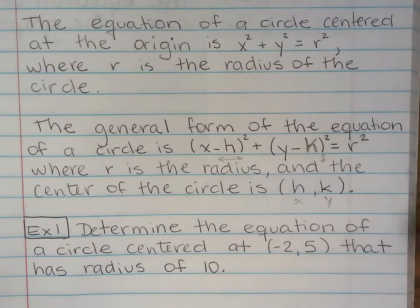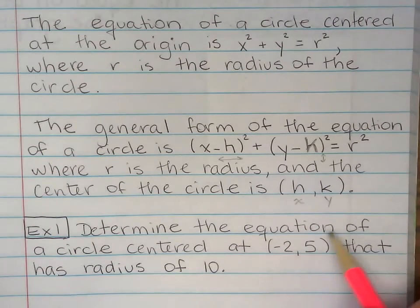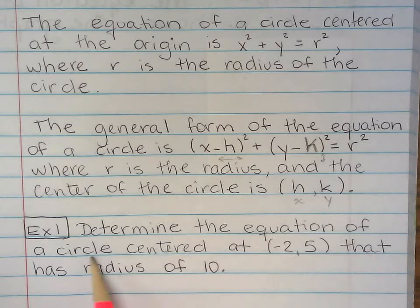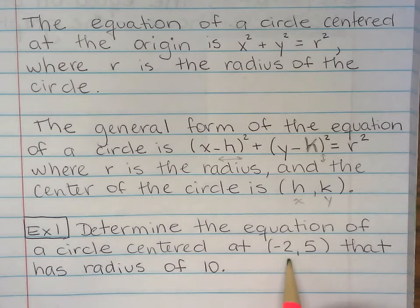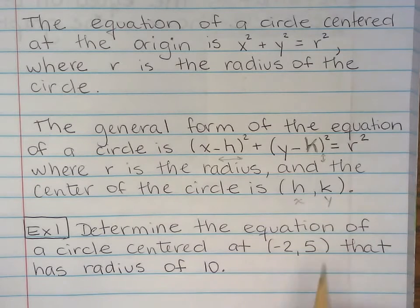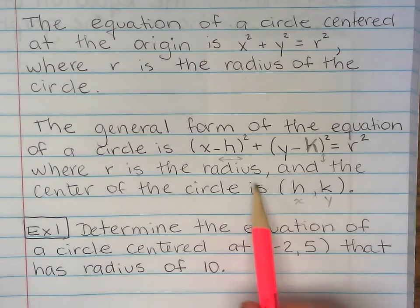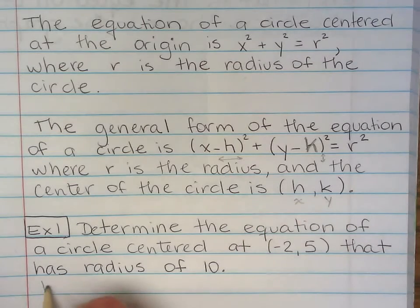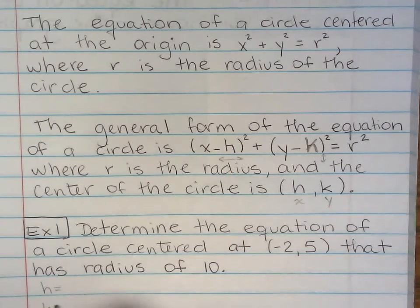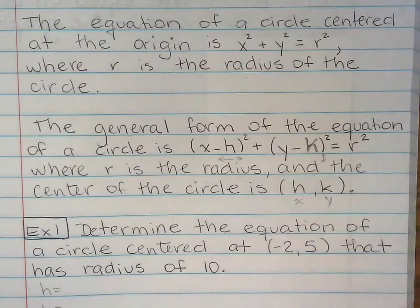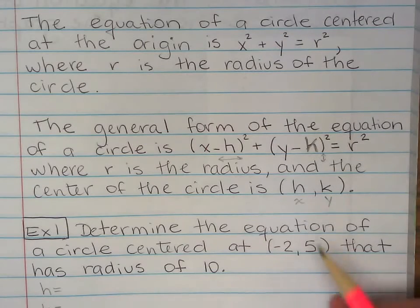Anyways, I got one example right here. We need to find the equation, given that the center of the circle is at (-2, 5), and they also gave us the radius. So, following our formula right here, we need to find h, k, and r. Well, we don't have to find it, we have it.